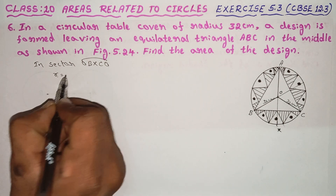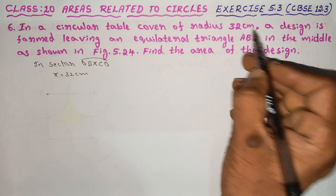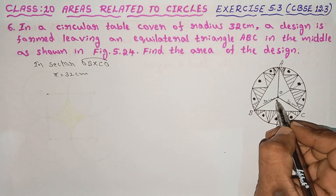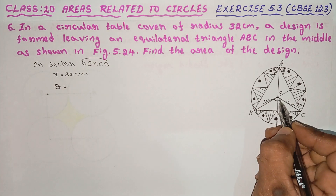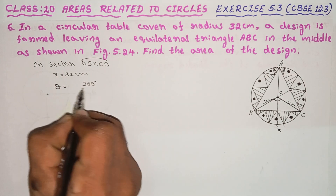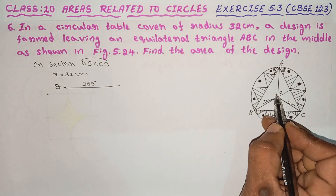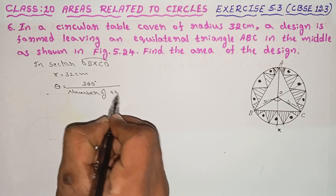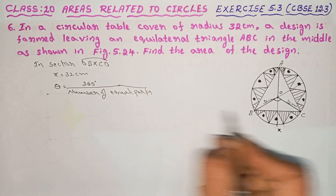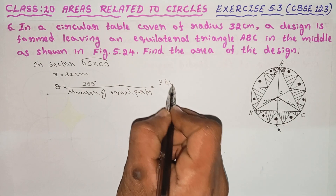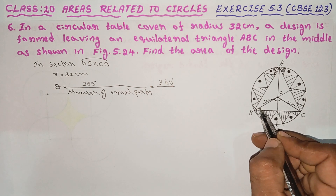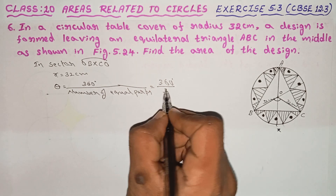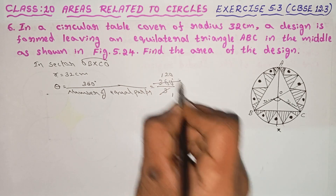For sector OBCO, radius R is equal to 32 cm. The angle theta: since the center is divided into 3 equal parts, 360 degrees divided by 3 equals 120 degrees. So theta equals 120 degrees.